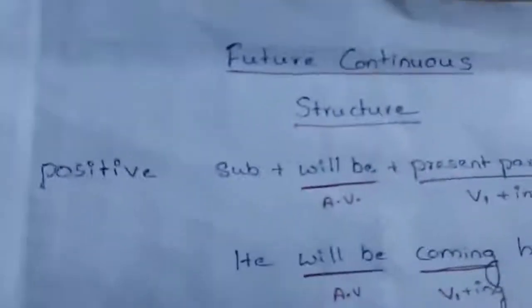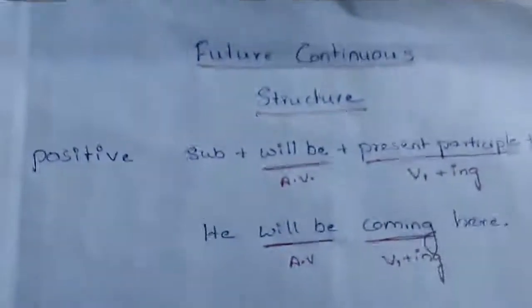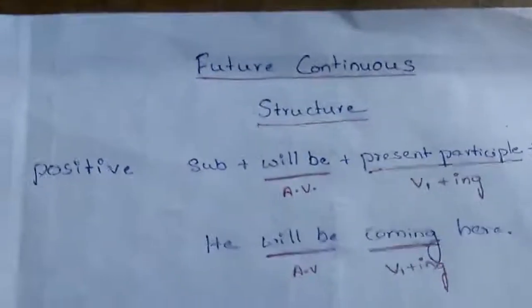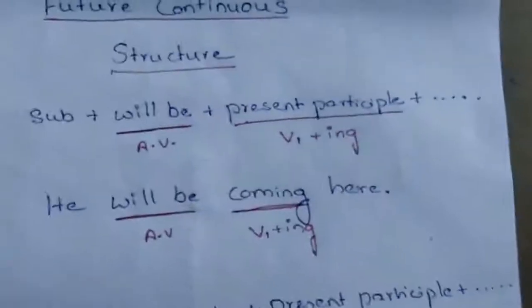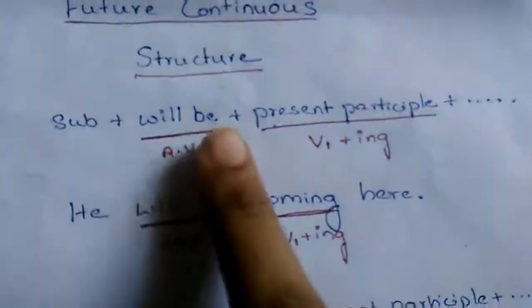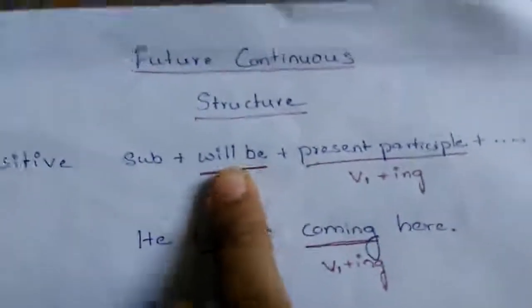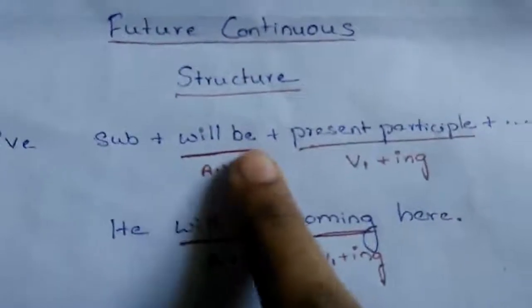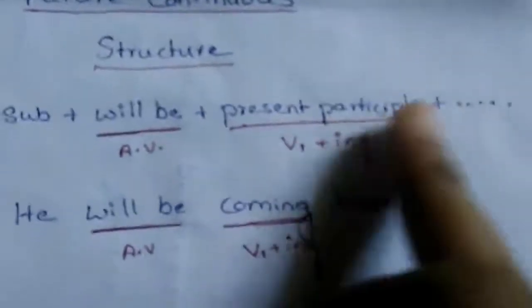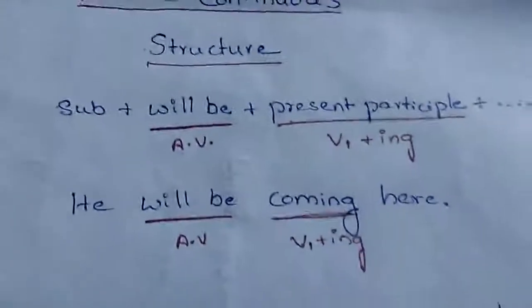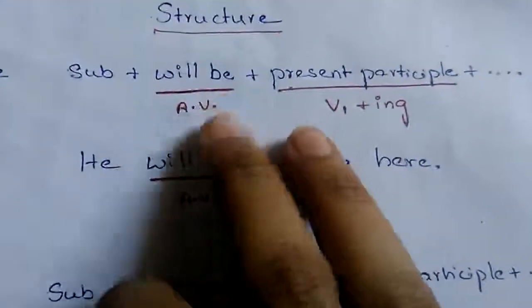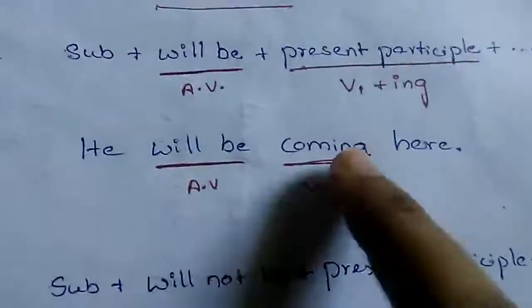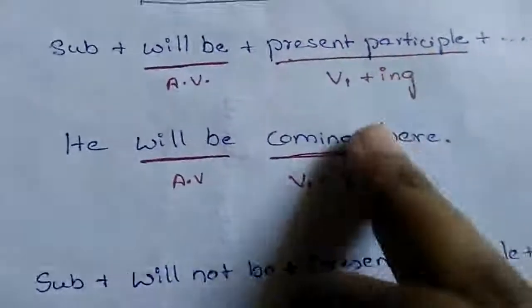Now we take the second type of future tense, that is future continuous. The structure of future continuous is like this: subject plus will plus be plus present participle plus the rest of the sentence. Here, 'will' is the helping verb that indicates future tense, and 'will be' is the form we use to refer to future continuous. The main verb is in present participle form.